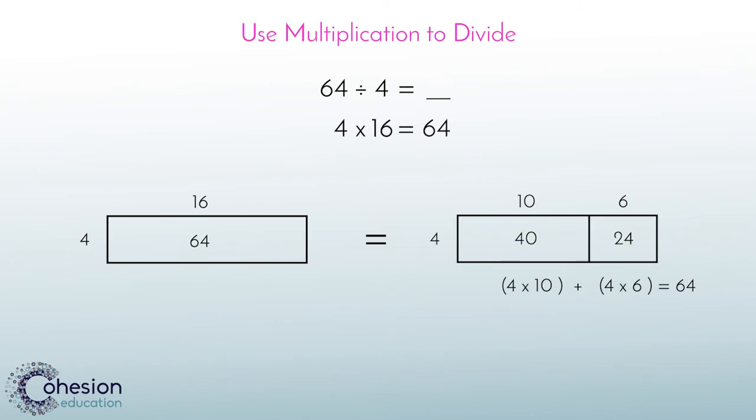A multiple of 10 is effective because it gets you as close to the actual number as possible with the greatest amount of ease. Therefore, we can say that 4 times 16 is 64. So, 64 divided by 4 is 16.